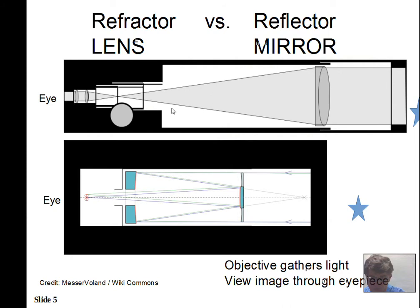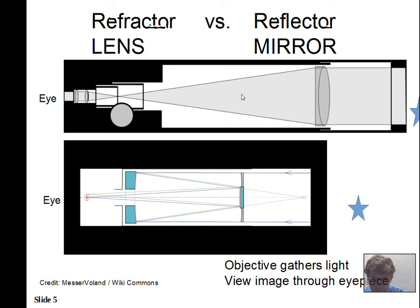Refractors generally have better image quality than reflectors, but they have a problem: if you don't have a high-quality refractor, the refraction through the objective lens can distort the image by causing different colors to come to different focal points — blues focus in one place, reds in another — blurring the image. This color separation problem is called chromatic aberration. Reflecting telescopes don't have this problem because all colors reflect at the same angle, so reds and blues take the same path.